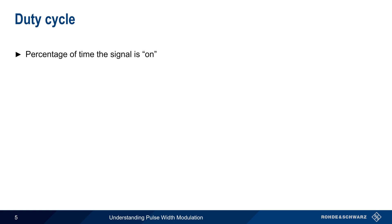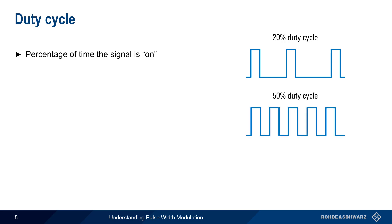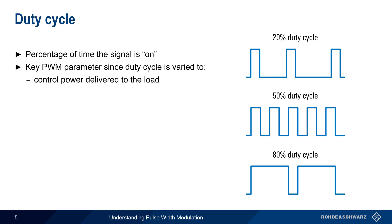Duty cycle is the percentage of time that the signal is on. For example, a signal with a 20% duty cycle is on 20% of the time. A 50% duty cycle means the signal is on half of the time, and a signal with an 80% duty cycle is on 80% of the time. Duty cycle is the key parameter in pulse width modulation, because the duty cycle is chosen or varied in order to control the amount of power delivered to the load, or to change the behavior of the load.